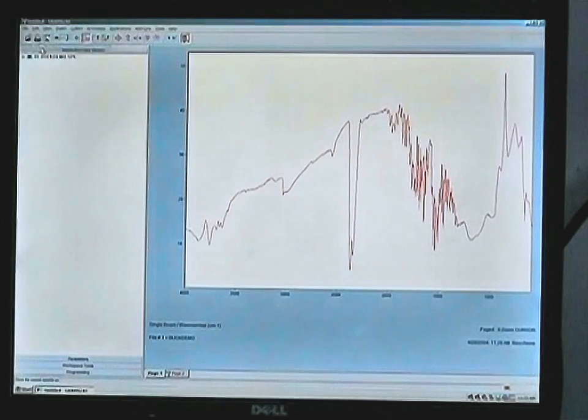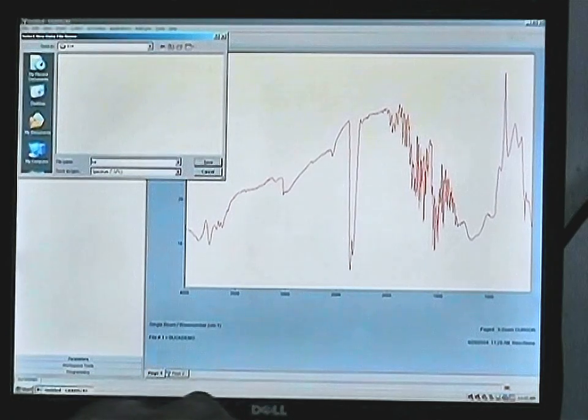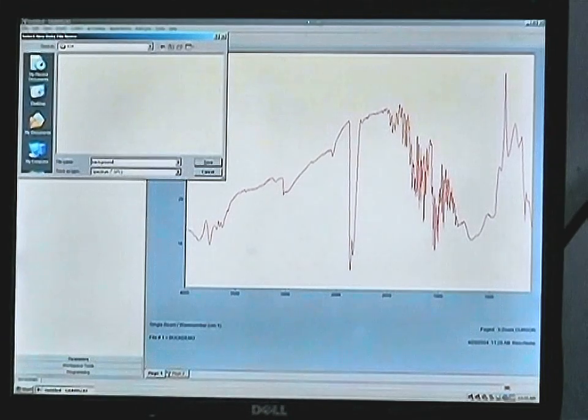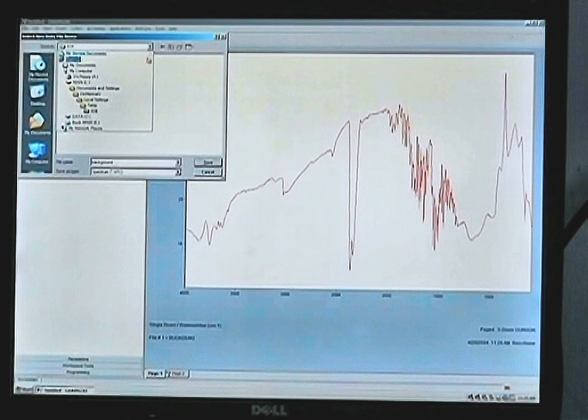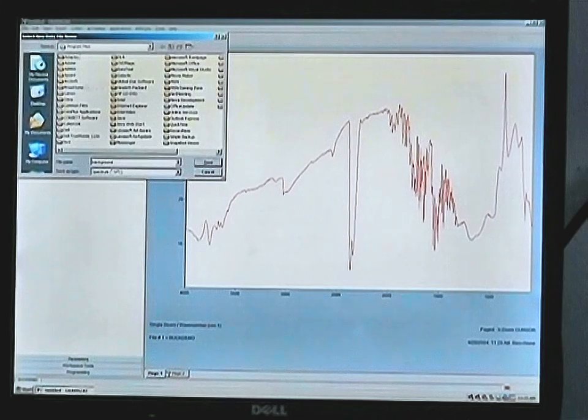Save trace as, and usually you give it a default name such as background. Remember where you put the file, as you will need to recall it later when doing your transmission scan. Save this in the appropriate data directory or wherever you want to keep your final spectrum.